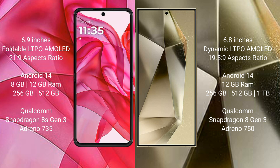Motorola RAZR 50 Ultra runs on the Android 14 operating system. Samsung Galaxy S24 Ultra also runs on Android 14. Motorola RAZR 50 Ultra comes with 8GB or 12GB RAM and 256GB or 512GB internal storage, powered by a Snapdragon 8 Gen 3 processor with Adreno 735 GPU.